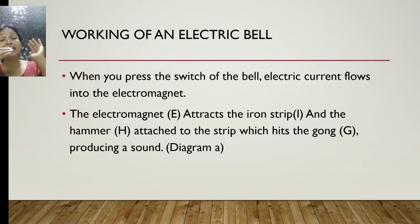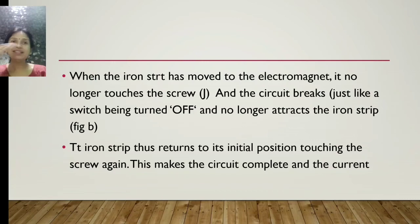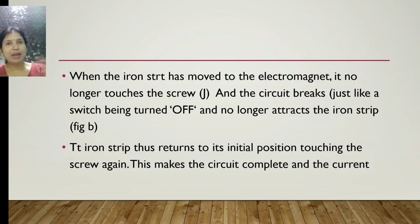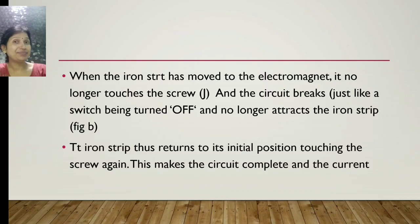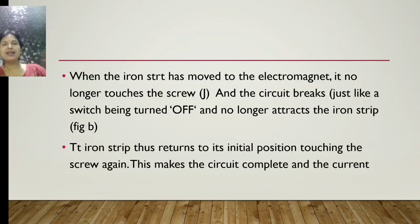When the iron strip moves toward the electromagnet, it no longer touches the screw, so the circuit breaks — just like a switch being turned off — and the electromagnet no longer attracts the iron strip. The iron strip then returns to its initial position, touching the screw again, which makes the circuit complete once more.